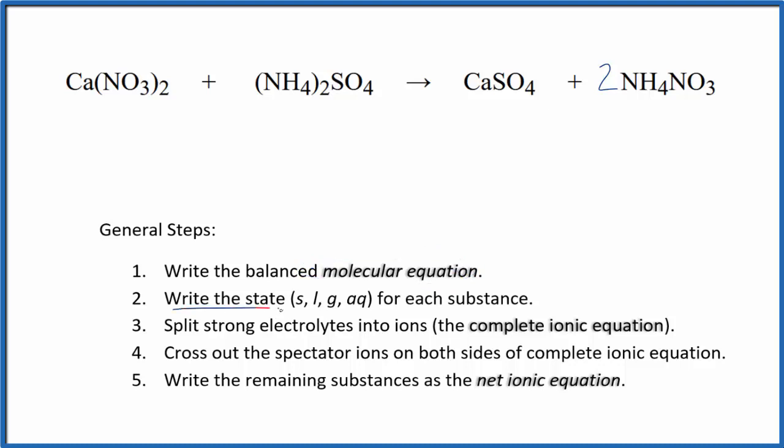Now we can write the states for each substance. That'll look like this. If you know your solubility rules, compounds with nitrate ions here are very soluble, so those are both going to be soluble. And compounds with the ammonium ion are very soluble, so these dissociate into their ions and split apart.